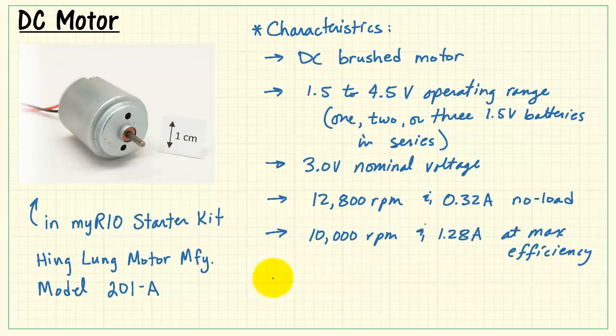At maximum efficiency, 10,000 RPM at 1.28 amps, and 80-gram centimeter stall torque.